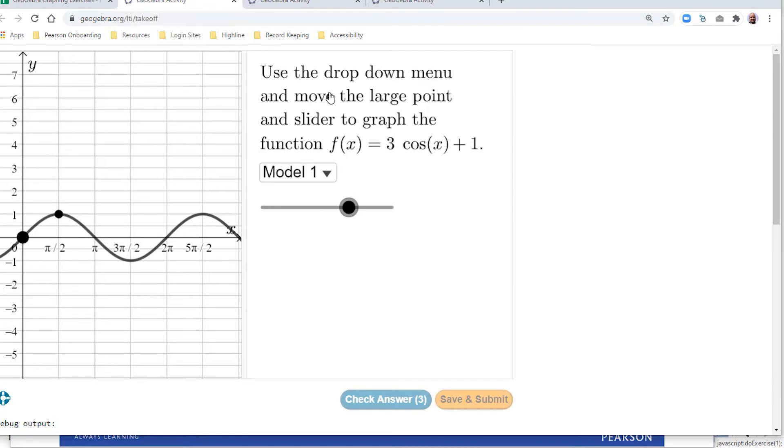This is graphing a trig function and it's much more like you would be graphing on paper. So three cosine x plus one, the student has to choose am I going to use model one or model two. Obviously we see that model one is our sine function and model two is our cosine function.